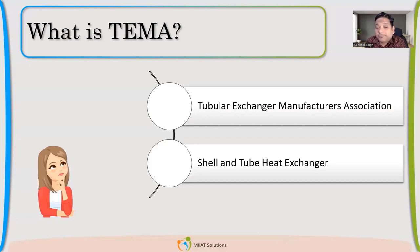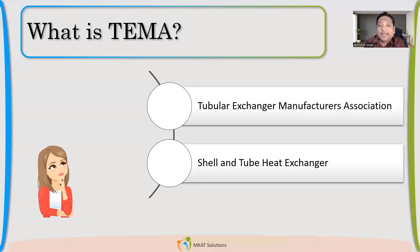The target for TEMA is shell and tube — these are the tubular heat exchangers. Shell and tube heat exchanger is what we are going to refer to. However, 90% of total heat exchangers are shell and tube, so that is how it's very, very important.